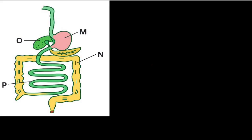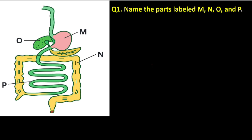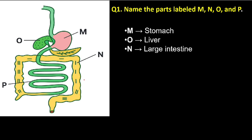We are done with the female reproductive system. Let us go on to another diagram — the digestive system. Name the parts labeled M, N, O, and P. M is called the stomach. O is called the liver. N is called the large intestine. And P, the one which is highly coiled or folded, we call it the small intestine.